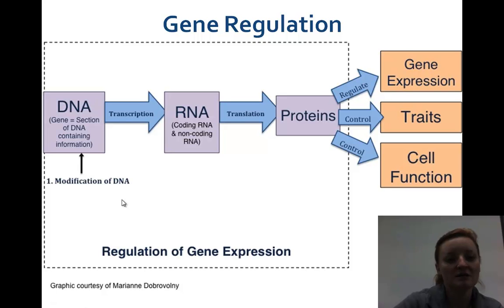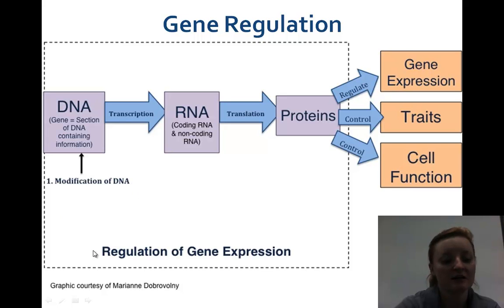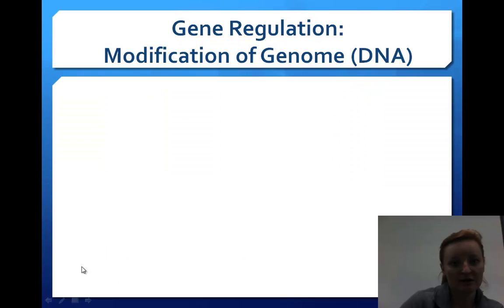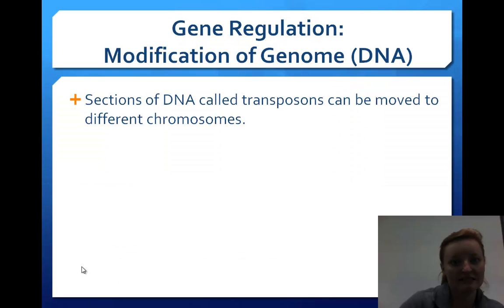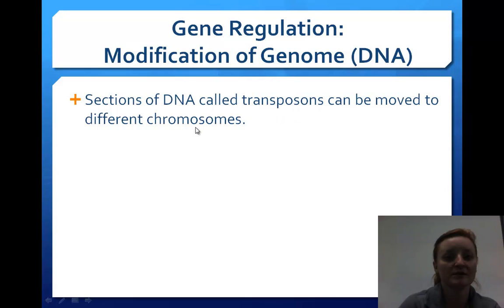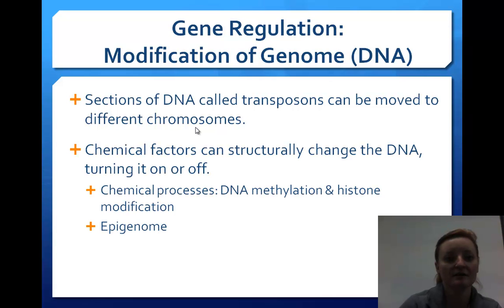The first thing we can change is we can modify the DNA — we can move it around. Sections of DNA called transposons can be moved to different chromosomes, so we can move those around and see what happens and what our offspring would look like.